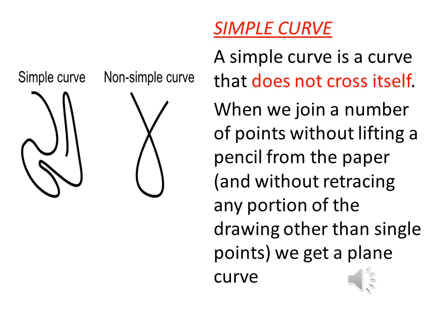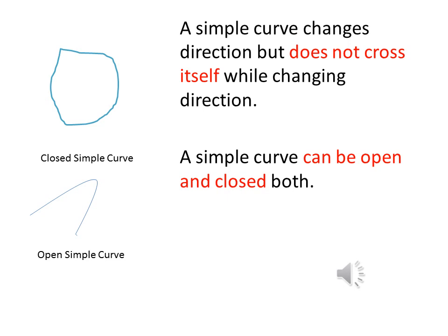The last type is called a simple curve. A simple curve is a curve that does not cross itself. When we join a number of points without lifting a pen or pencil from the paper, we get a simple curve — it is a free curve that is not tangled. A simple curve changes its direction like other curves but does not cross itself while doing so. A simple curve can be either open or closed, as shown in the figures.